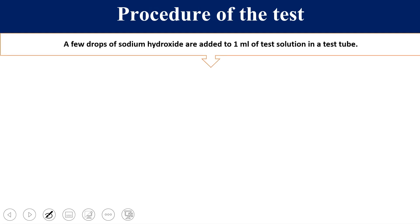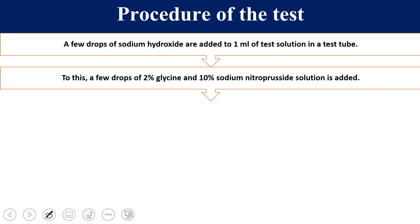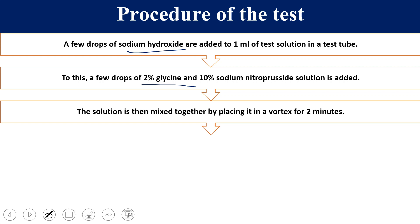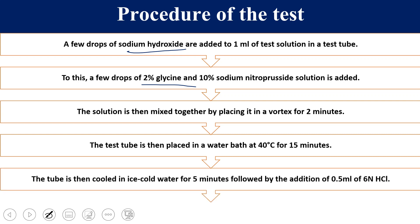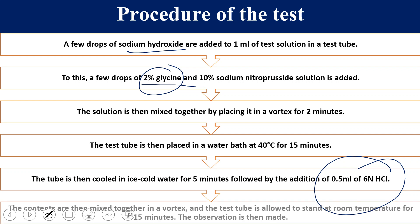For the procedure: first, a few drops of sodium hydroxide are added to 1 ml of test solution in a test tube. Then a few drops of 2% glycine and 10% sodium nitroprusside solution are added. The solution is mixed in a vortex for 2 minutes, then placed in a water bath at 40°C for 15 minutes. The tube is then cooled in an ice bath for 5 minutes, followed by addition of HCl for acidification. The contents are mixed again in a vortex and allowed to stand at room temperature for 15 minutes, then color formation is observed.